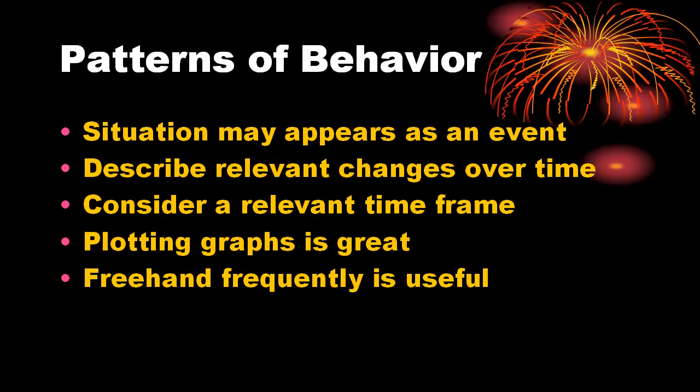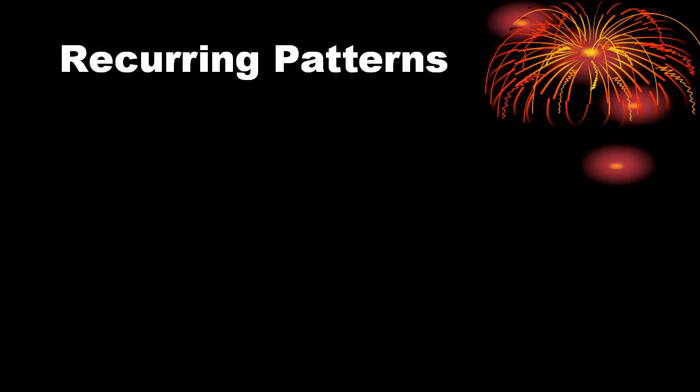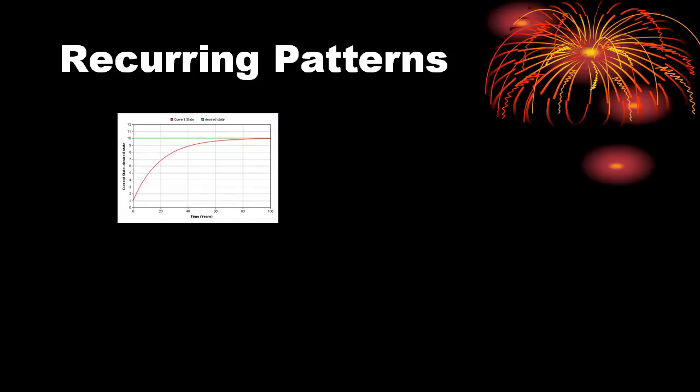There are some typical patterns of behavior which are seen over and over. Approaching a goal where something moves in a direction rapidly at first and then slows down as the goal is approached.